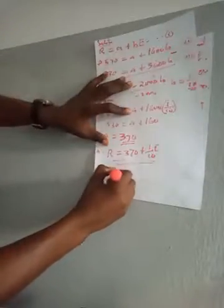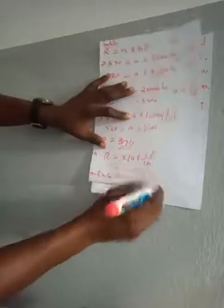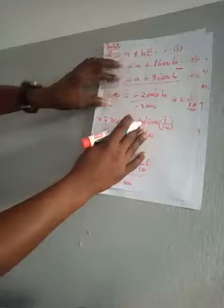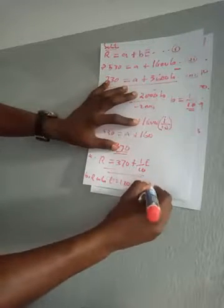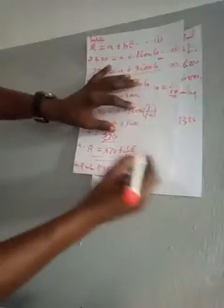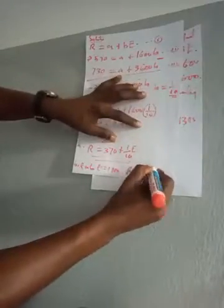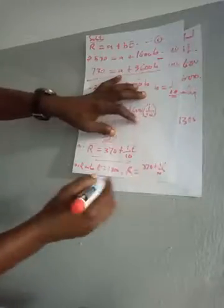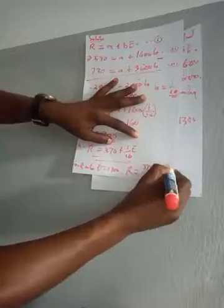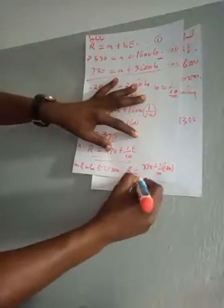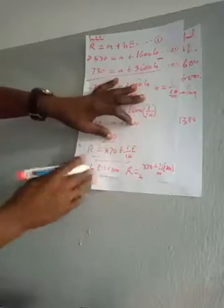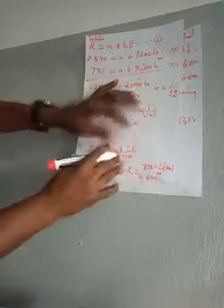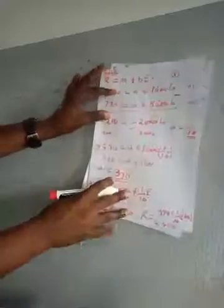To find r when e is equal to 1300, we substitute back into our equation. So r is equal to 370 plus one over ten times 1300, which gives r is equal to 500. This is how to solve questions on partial variation.